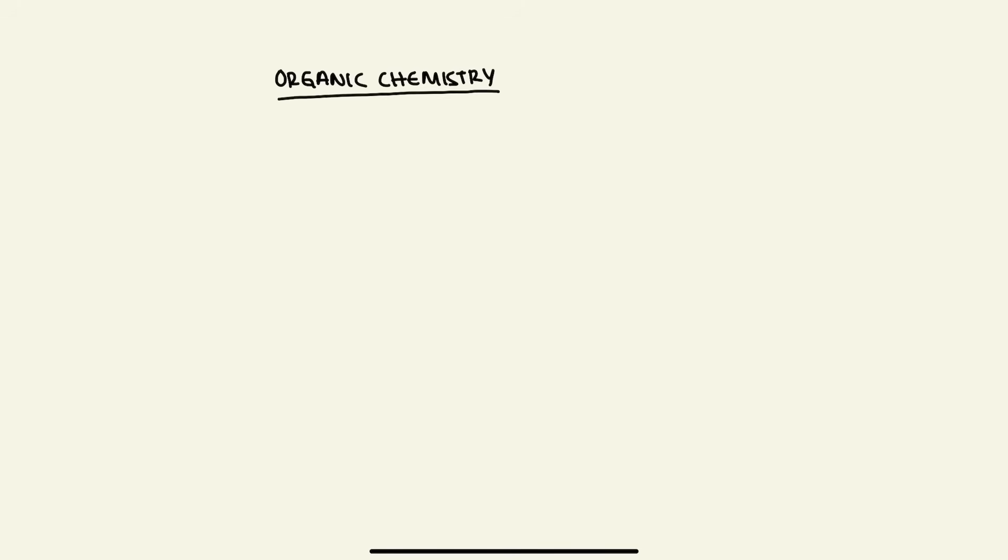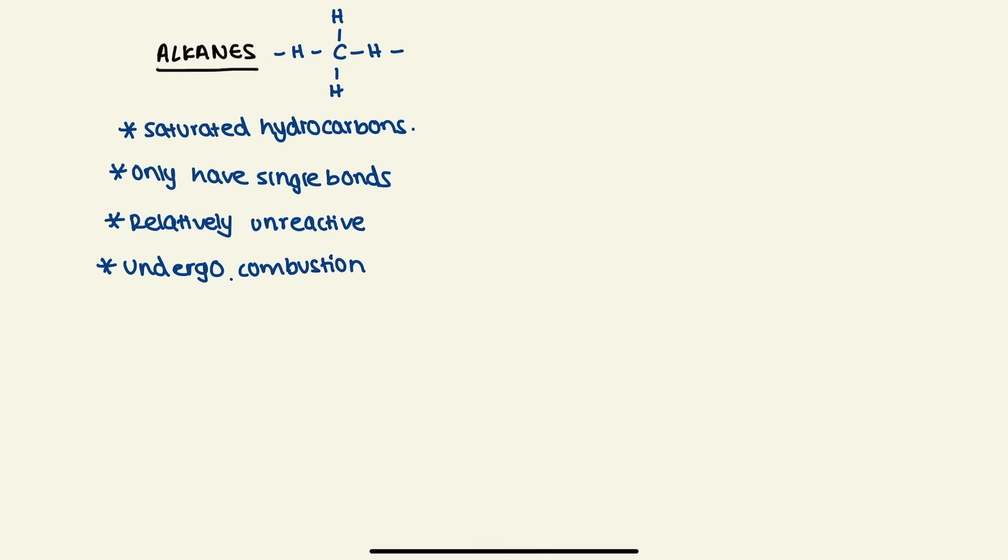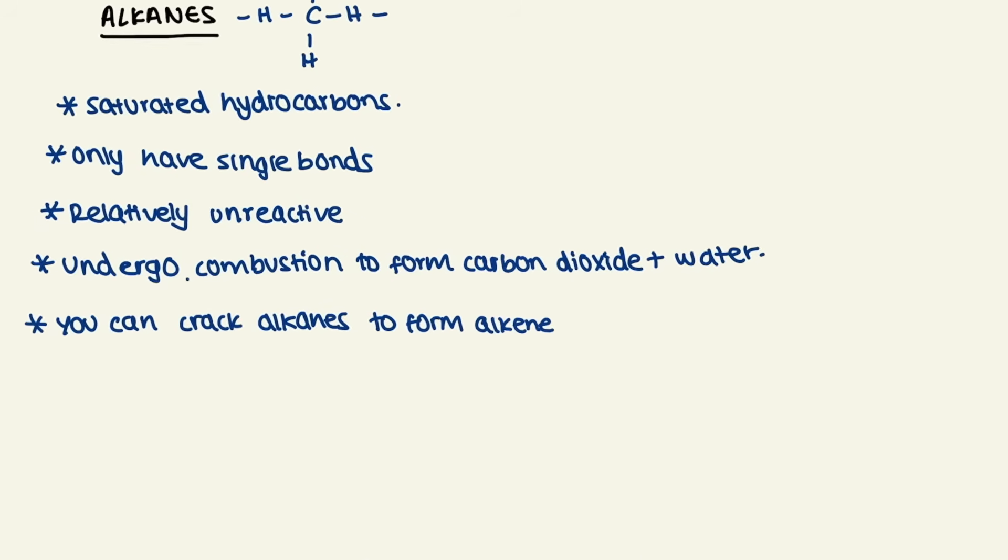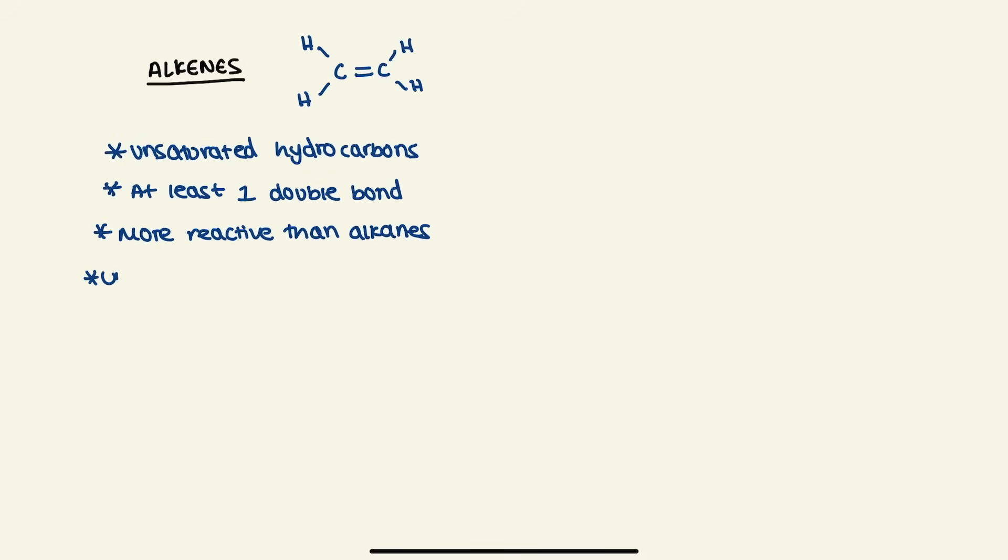With organic chemistry, we have four main types of groups that you need to know: alkanes, alkenes, alcohols, and carboxylic acids. Alkanes are saturated hydrocarbons with only single bonds. They are relatively unreactive but undergo combustion to form carbon dioxide and water. You can also do cracking of alkanes to form alkenes. Alkenes are unsaturated hydrocarbons with at least one double bond, more reactive than alkanes, and undergo addition reactions with bromine, hydrogen, or steam.